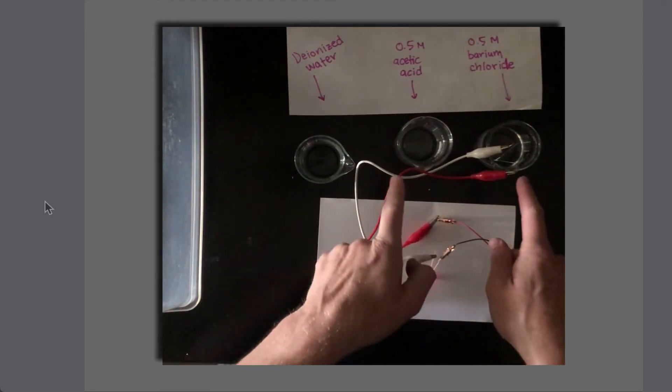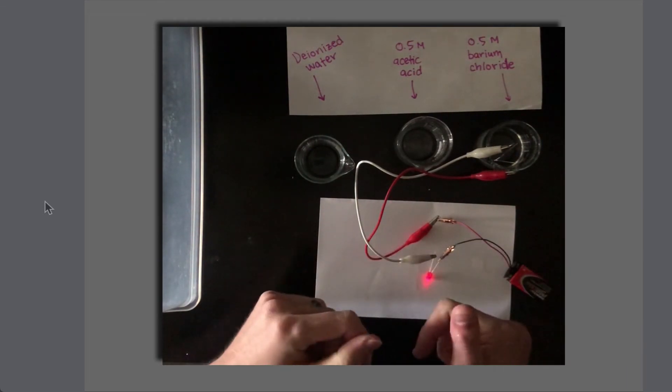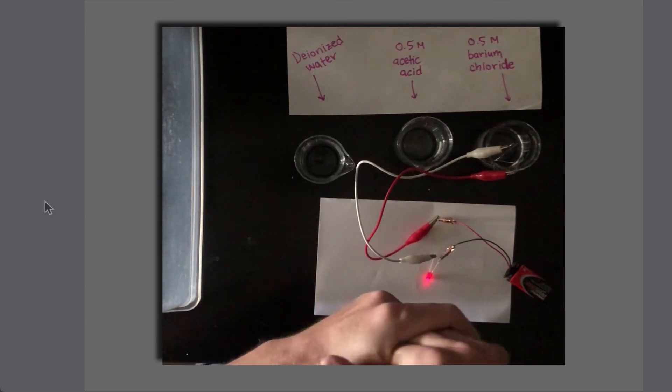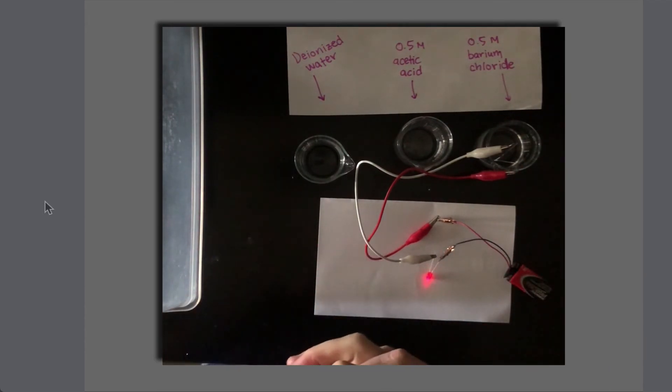The reason these two light up and the deionized water does not is that these two are called electrolytes, while the deionized water is what we call a non-electrolyte. So in the remainder of this video, we'll understand on a submicroscopic level why these solutions conduct electricity and how we can think about electrolytes in terms of strong versus weak and the distinctions, for example, between the acetic acid and the barium chloride.